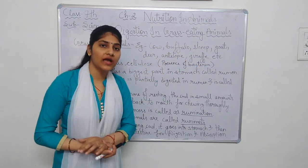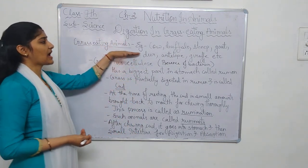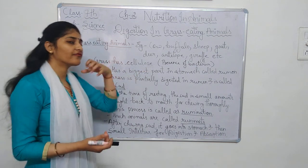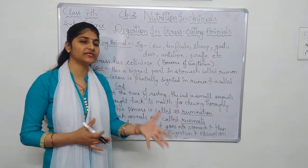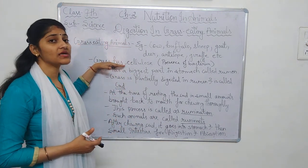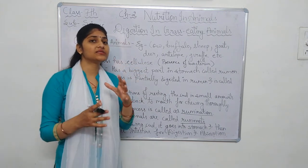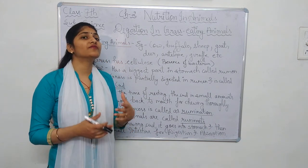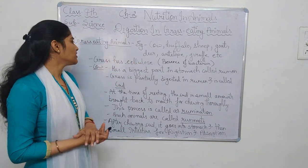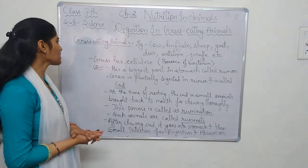All these animals are grass-eating animals, that means they are herbivorous. Because they eat grass, and grass contains cellulose, we human beings are not able to digest this cellulose, but these grass-eating animals can. How? These grass-eating animals have some bacteria present in their stomach which helps in the digestion of this cellulose.